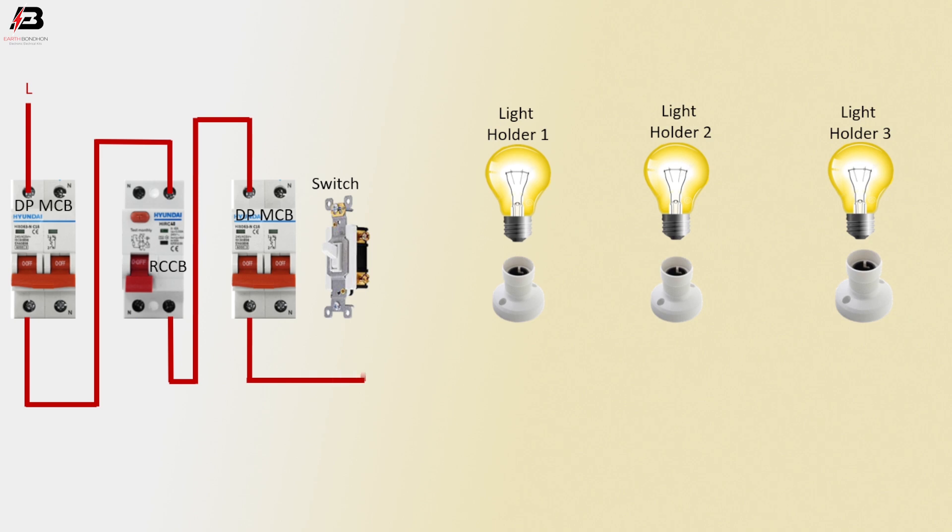Phase connection outgoing from double pole MCB to connect switch. Phase connection outgoing from switch to connect all holders 1, 2, and 3.